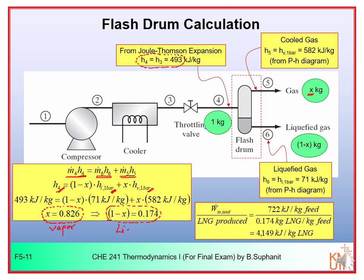Solving gives vapor fraction x = 0.826, so the liquid fraction is 1−x = 0.174. This means from the simple liquefaction process, for 1 kilogram of gas fed, you get only 0.174 kilograms of liquid — just 17.4% of the feed becomes liquid. Production is very small.